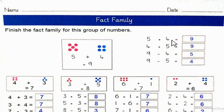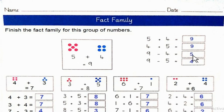5 plus 4 is equal to 9. 4 plus 5 is equal to 9. 9 minus 4 is equal to 5. And 9 minus 5 is equal to 4.